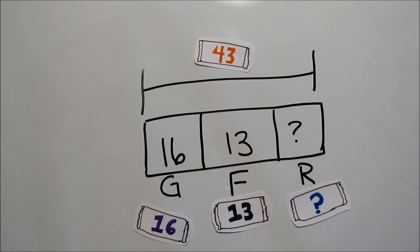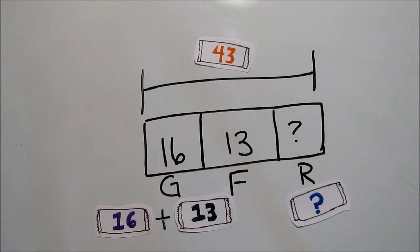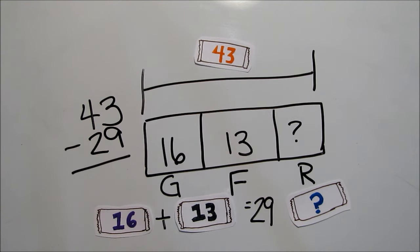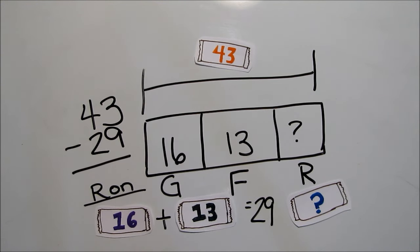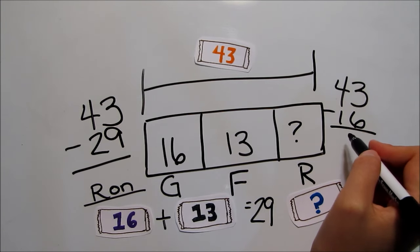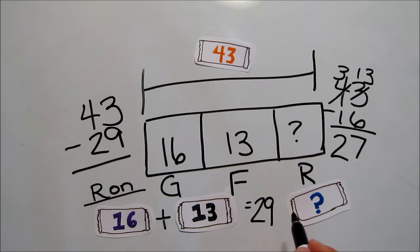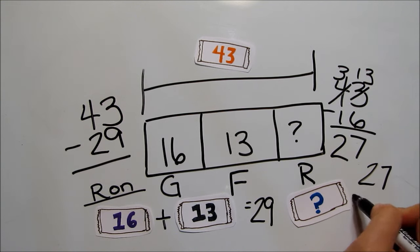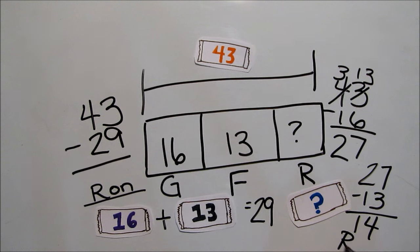but there are different ways to solve it. We can add George's and Fred's candy bars and take those 29 away from the 43. We know that any candy bars that are left belong to Ron. Or, we can take George's 16 bars away from the total, and then follow up by taking Fred's 13 bars away from the answer we just got. Once again, the candy bars we are left with belong to Ron.